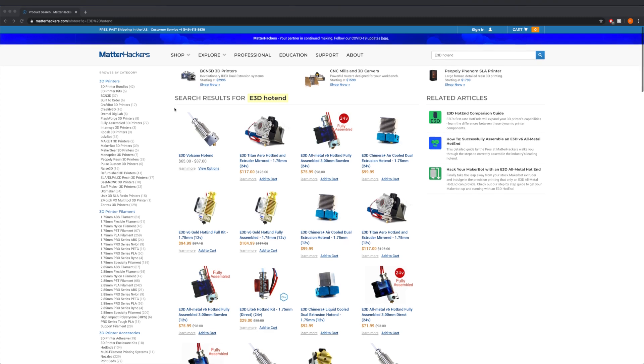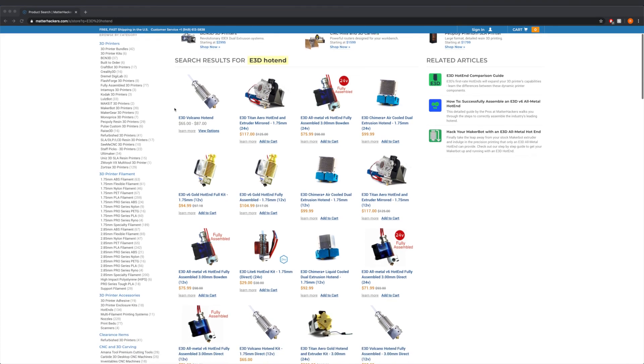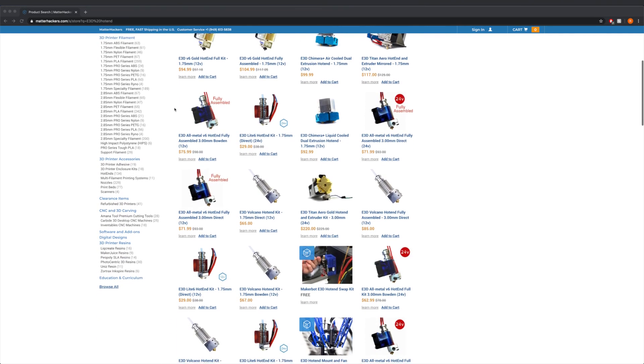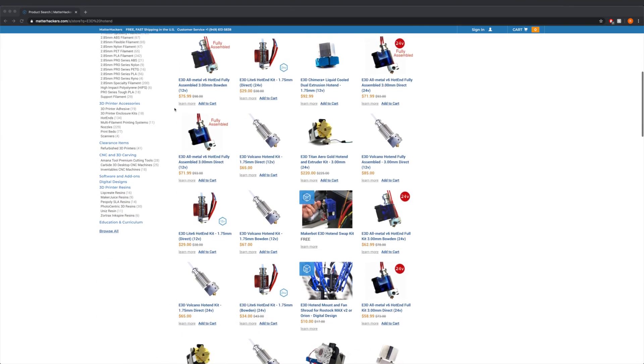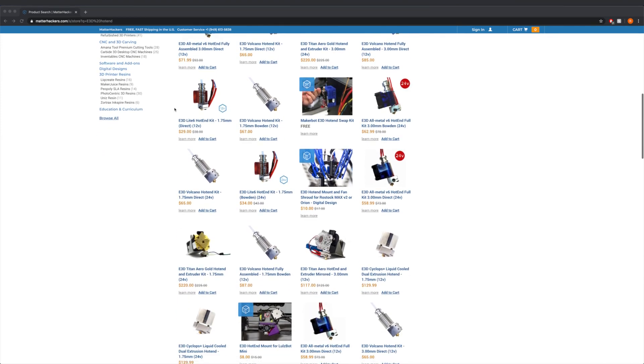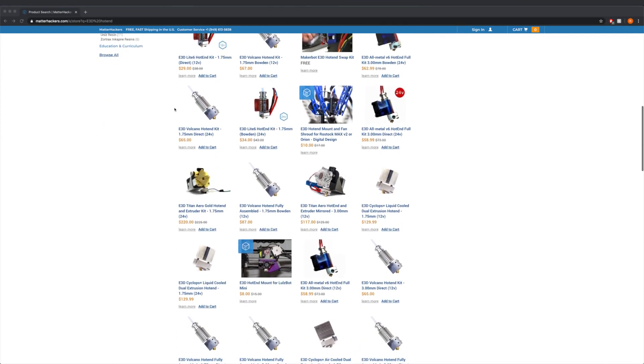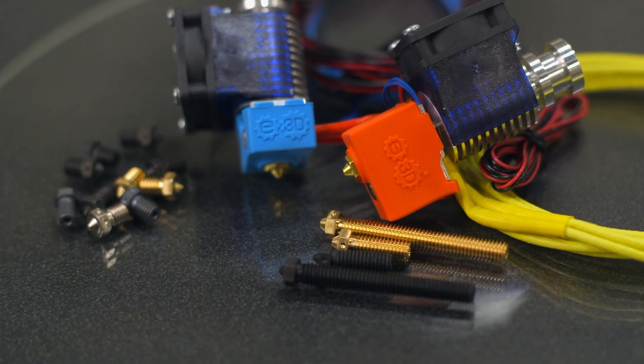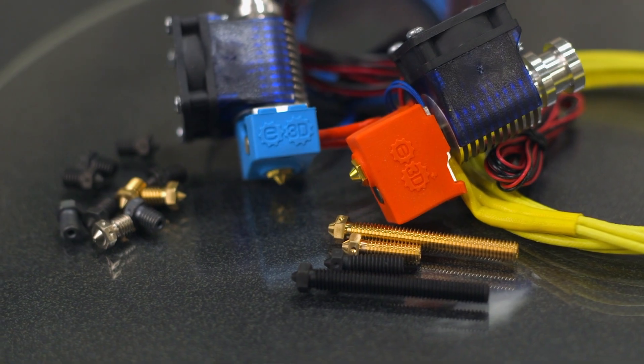Every nozzle needs a hotend, and E3D has the lineup to prove it. There are single and dual extrusion options, groove-mounted or threaded mounts, dual-color or dual materials, air-cooled or liquid-cooled, low-temperature and high-temperature. There are even different hotends designed with a longer melt zone to achieve high-flow 3D printing. Each hotend has been designed to excel for a specific purpose without forgetting about the features and performance that drives E3D forward.